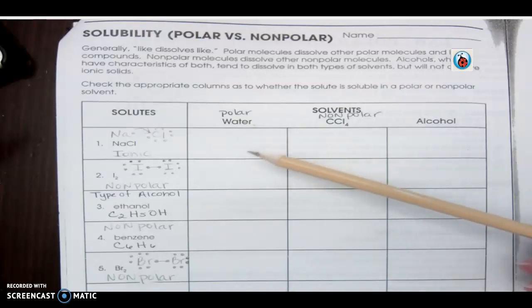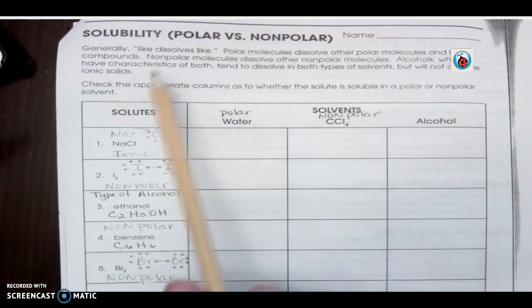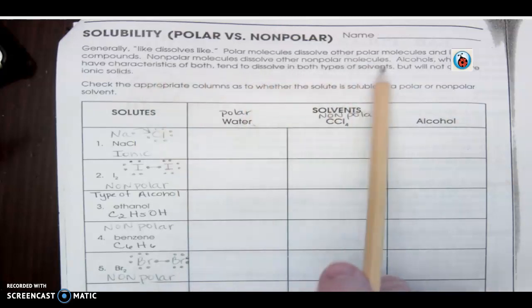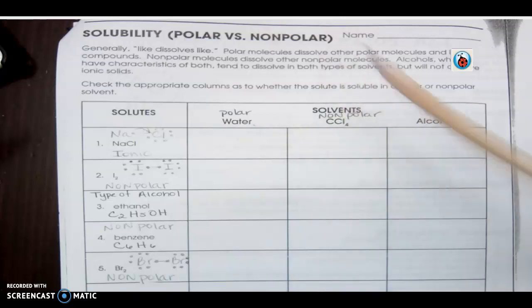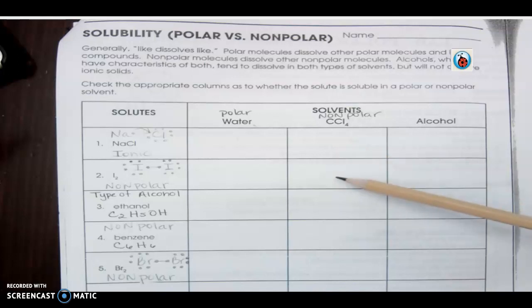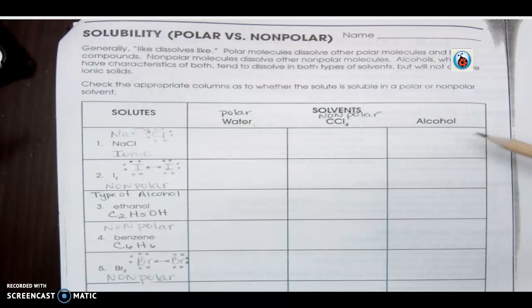Next column: nonpolar carbon tetrachloride. According to the directions, nonpolar molecules dissolve other nonpolar — and that's it. So will carbon tetrachloride dissolve ionic salt? No — no check mark. But will it dissolve nonpolar iodine? Yes — check mark.